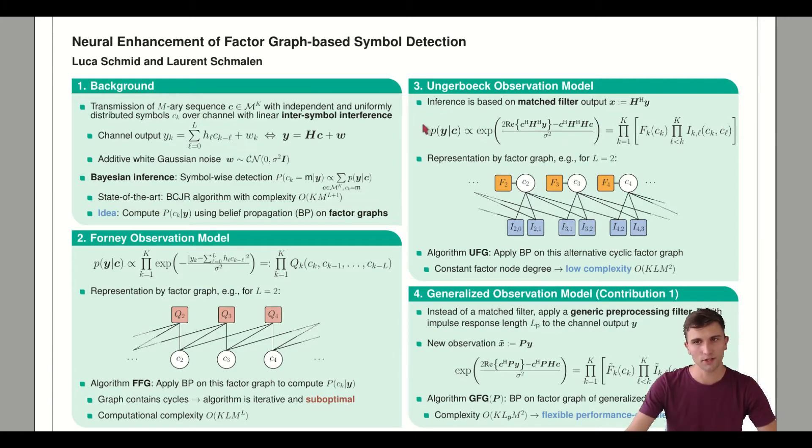This leads to an alternative factorization, represented by this factor graph here. You can see the structure is quite different. We have factors which only depend on one variable node, given in orange, these F factors. And we have factors I which depend on pairs of variables, given by these blue squares. The nice thing about this structure is that the factor node degree is constant, with degree one or two.